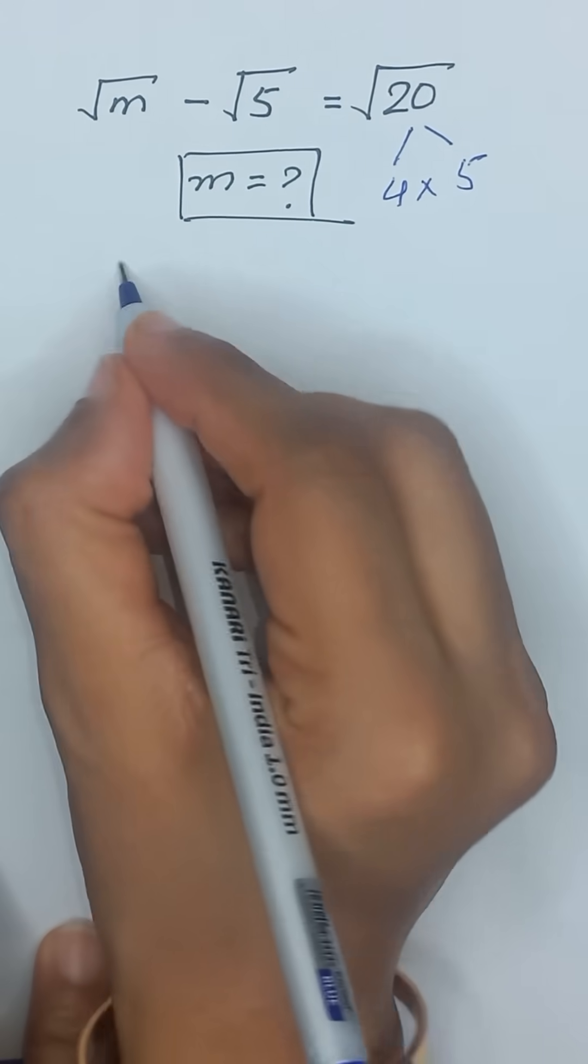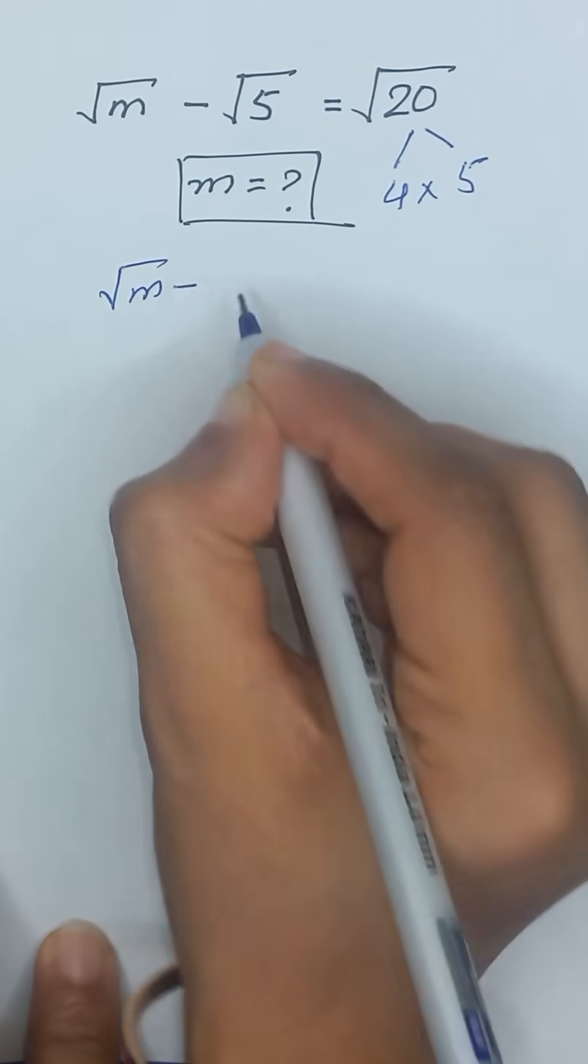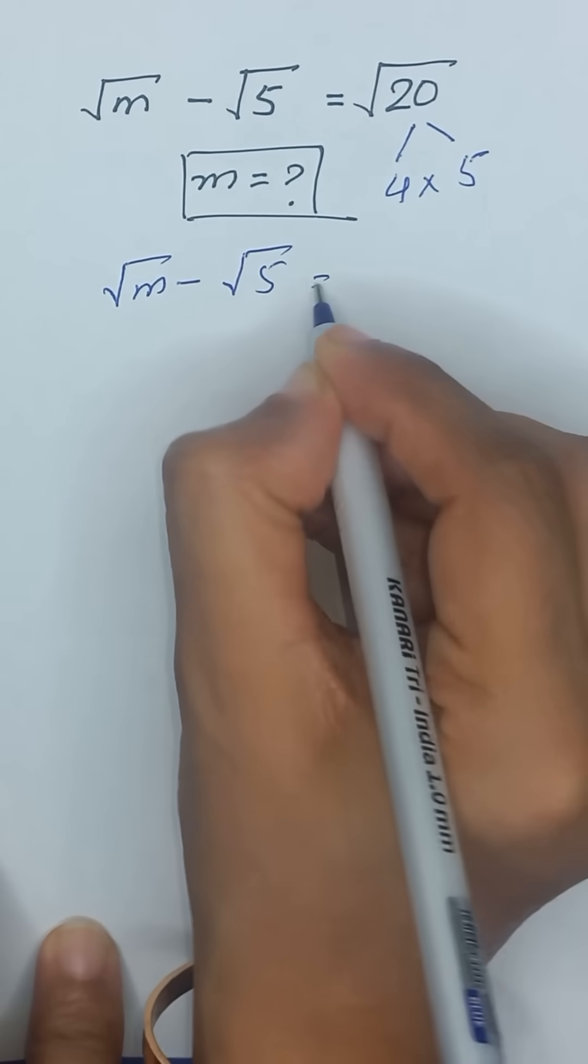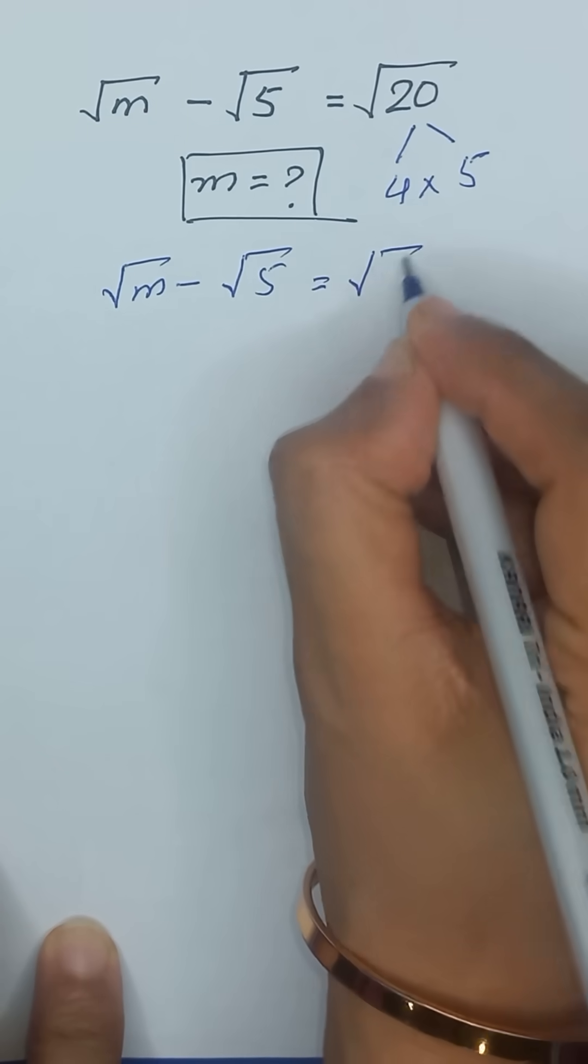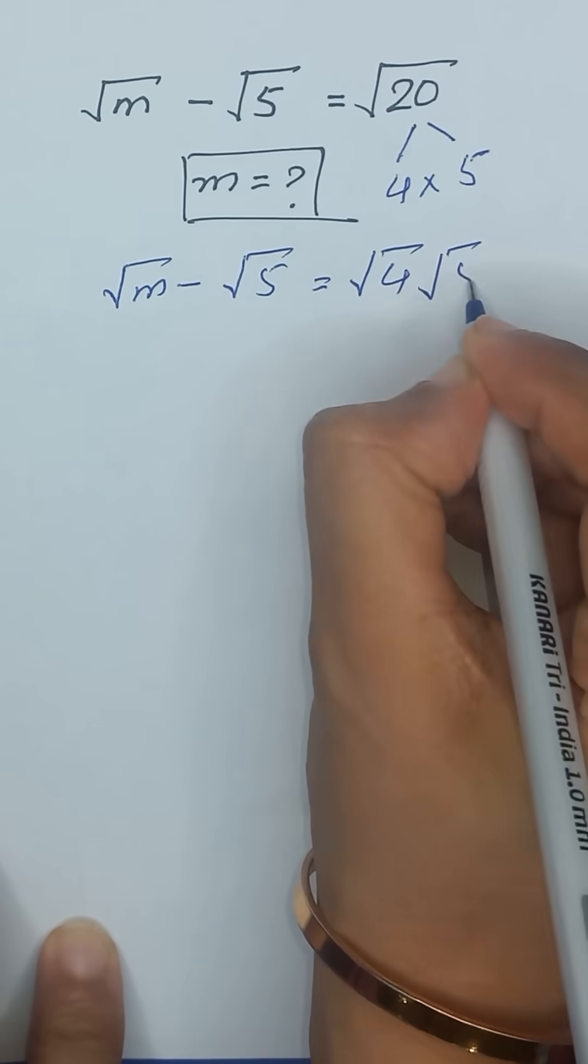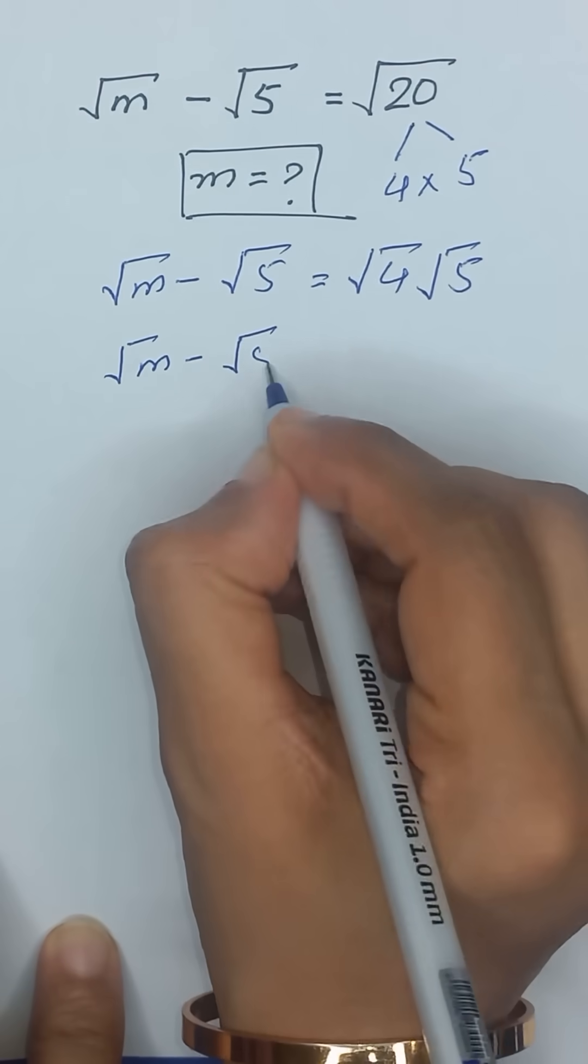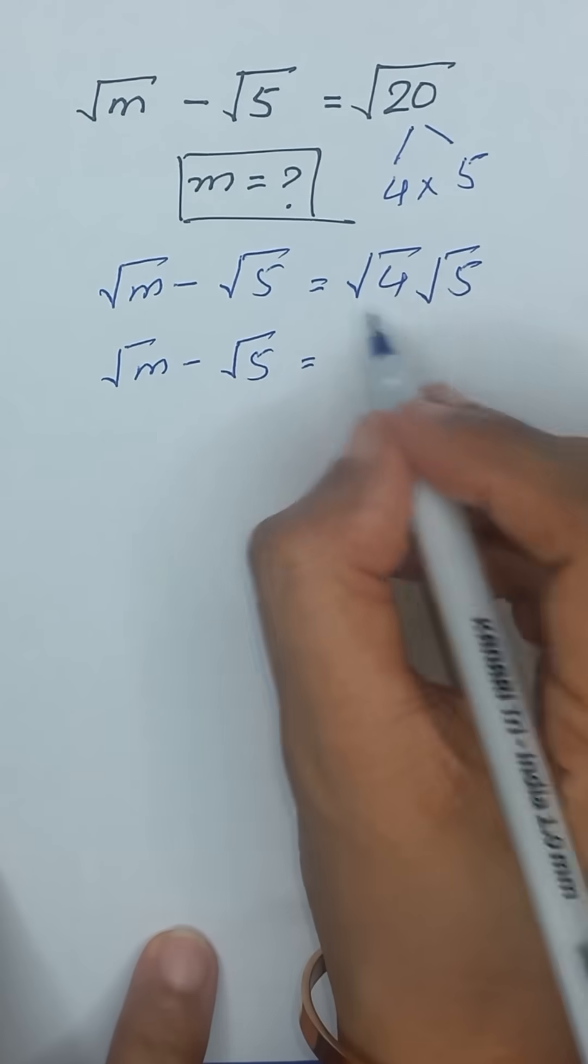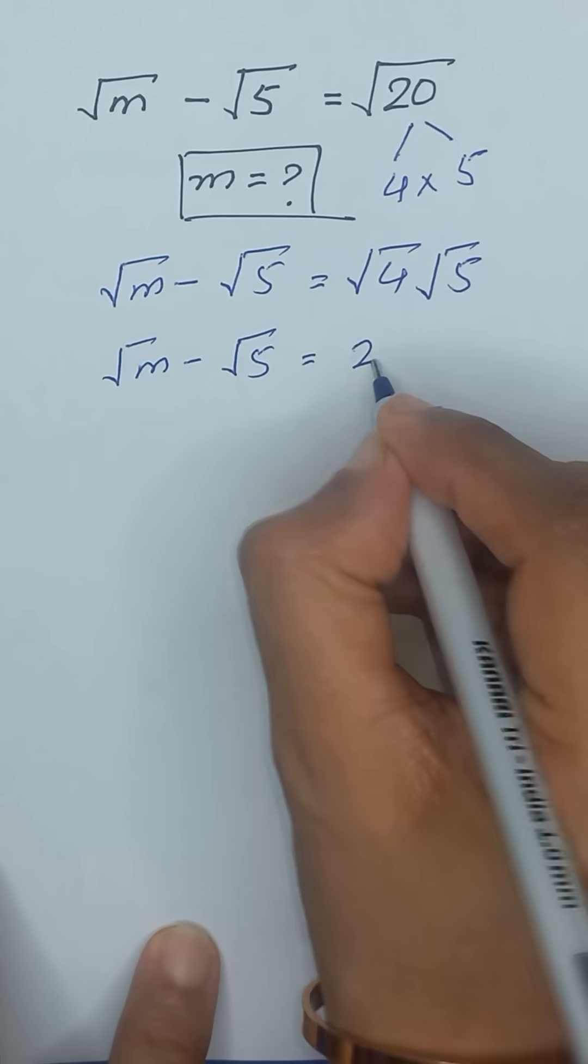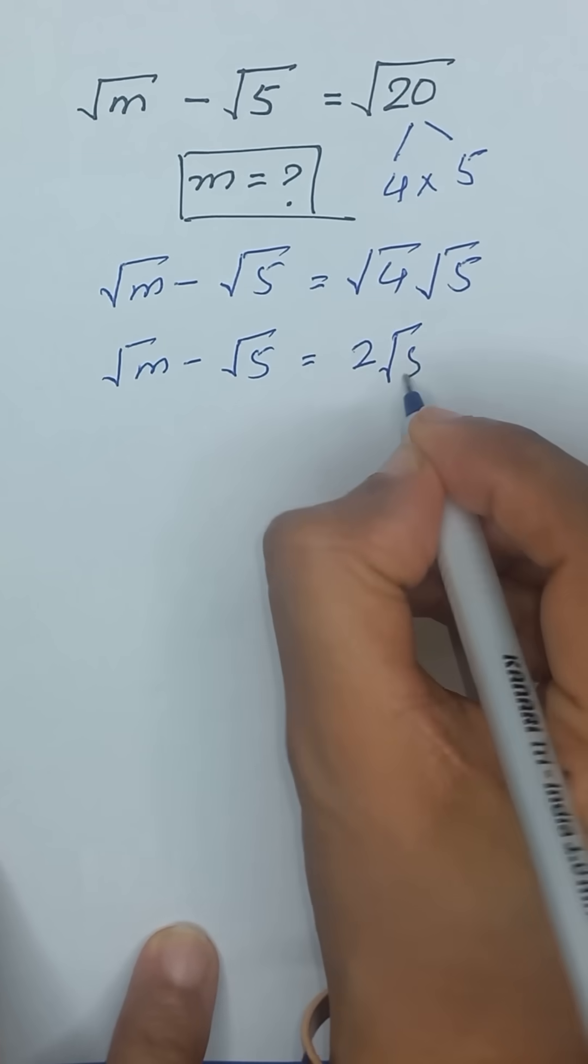So we can write it as square root of m minus square root of 5 is equal to square root of 4 times square root of 5. Square root of m minus square root of 5 will be equal to square root of 4, which is same as 2 times square root of 5.